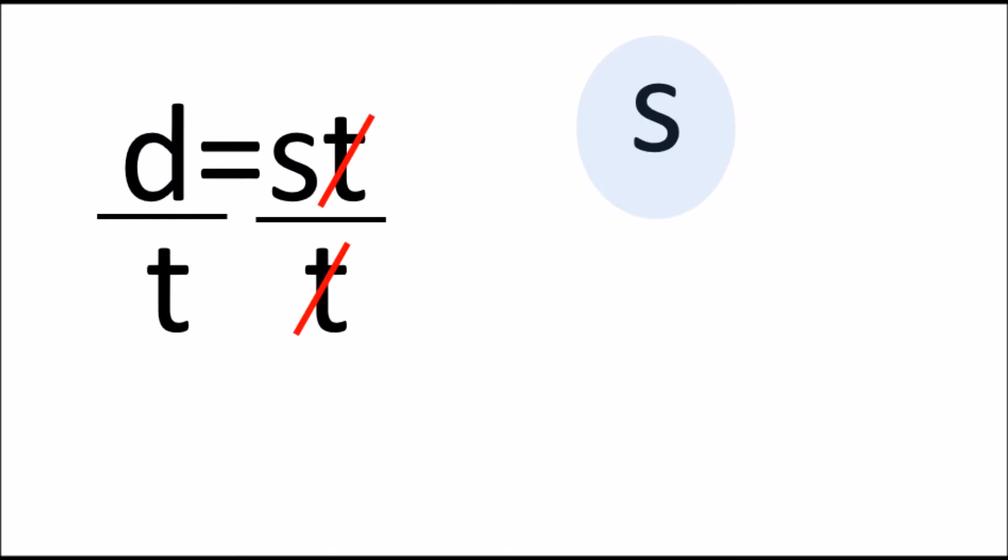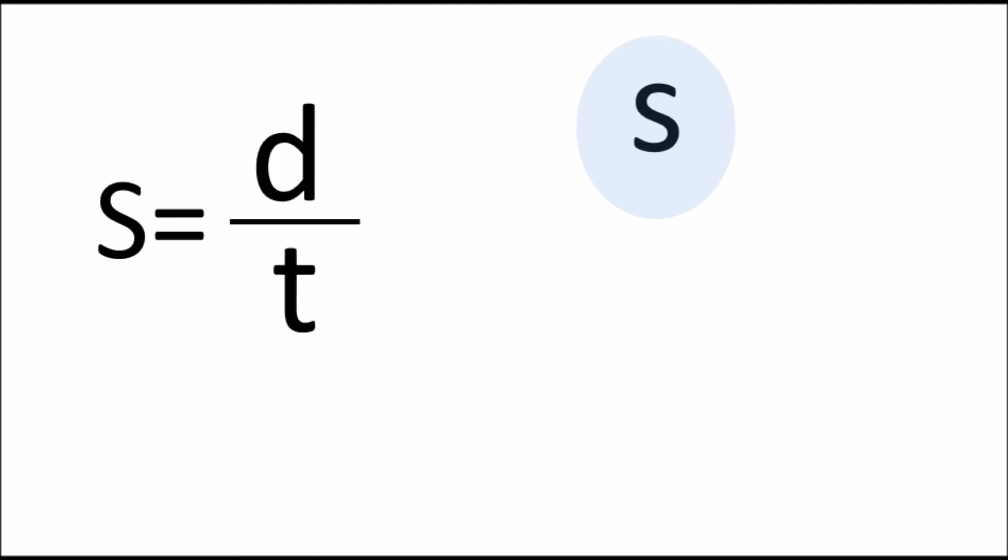These two t's cancel out and we're left with s on its own. And if we tidy that up and put the s around the other side like it should be, there we go. So s equals d over t, there's our equation.